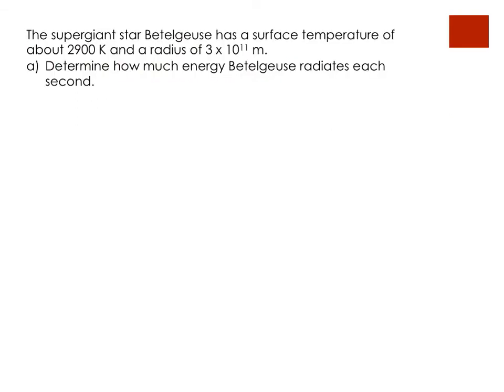Okay, so let's try doing a question. So, the supergiant star, Betelgeuse, has a surface temperature of around 2,900 Kelvin and a radius of 3 times 10 to the power 11 meters. Determine how much energy Betelgeuse radiates each second. Realize, energy per second, they're looking for the power. So, let's use the Stefan-Boltzmann law. So, for a star, we can use emissivity of 1, which is approximately the black body.